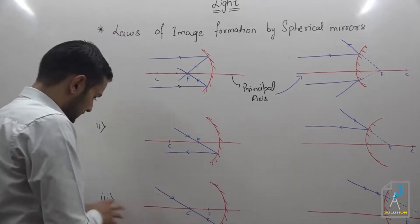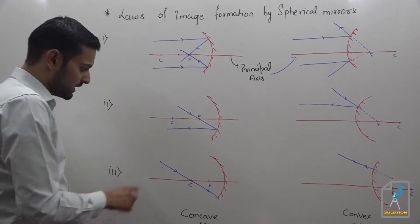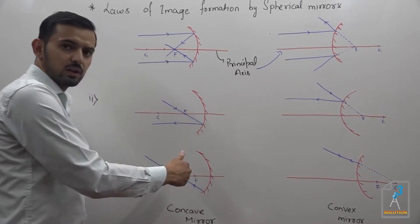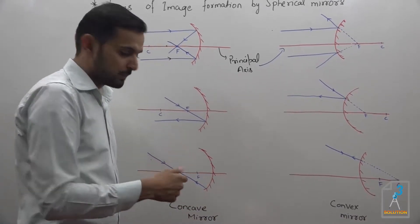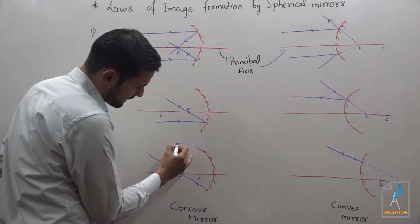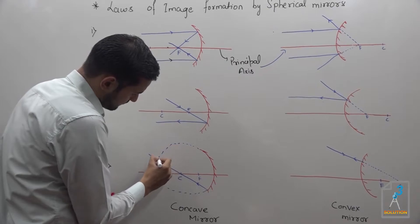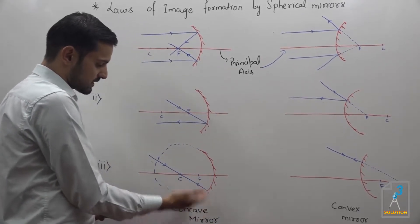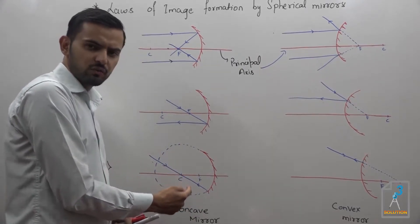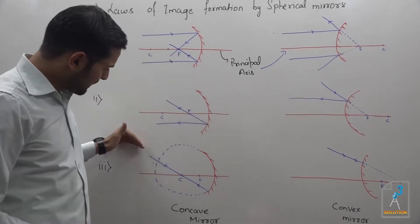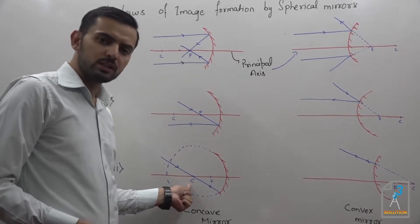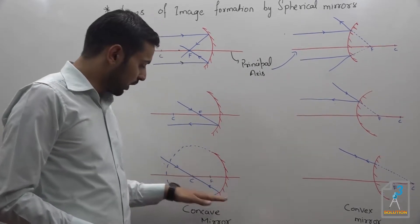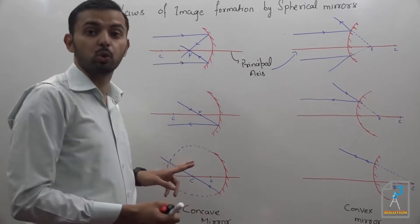Now let's jump to the third law. A light ray passing through the center of curvature — we've already discussed that it is the center of the sphere of which this mirror was a part. If I make a light ray pass through the center of curvature, after reflection from the concave surface it will rebound and retrace its own path — it won't go here and there.